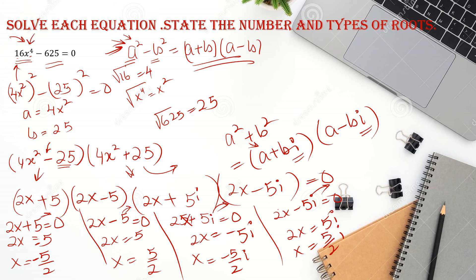Since the question had degree 4, we get exactly 4 answers or 4 zeros: x = -5/2, x = 5/2, x = -5i/2, and x = 5i/2.